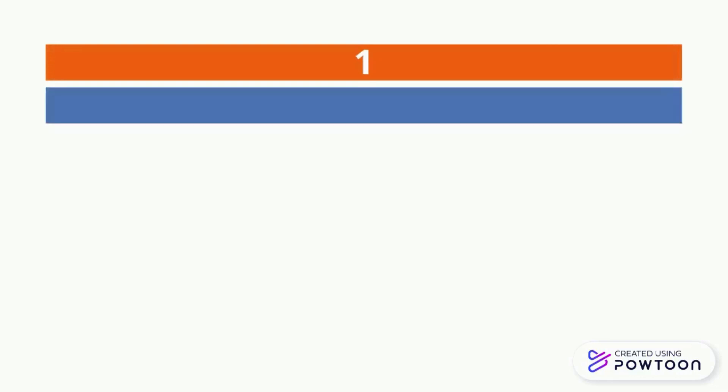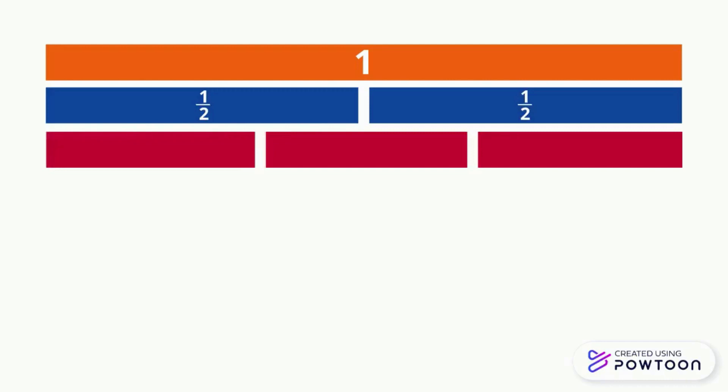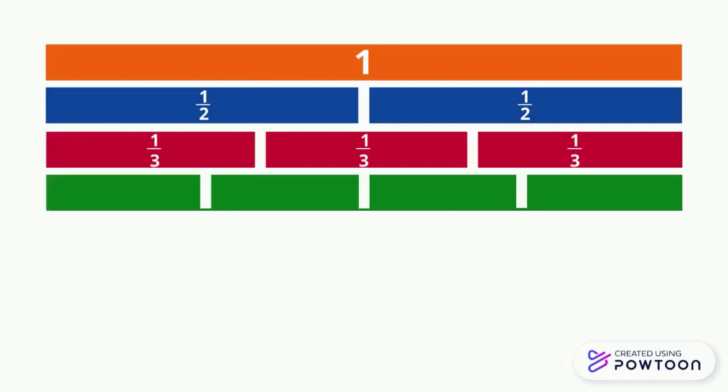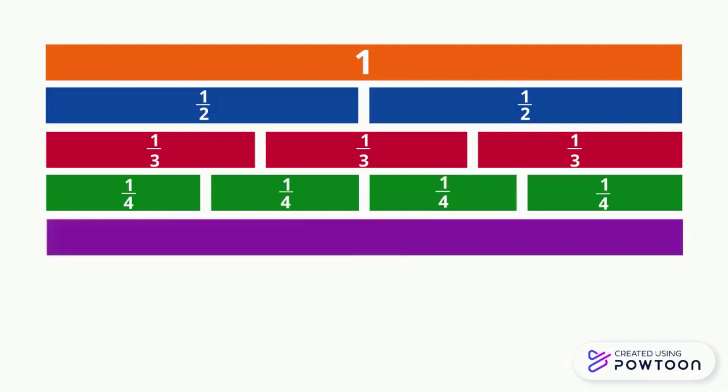So, if we have a rectangle, and we divide it into two equal parts, then the fraction of each part is 1 over 2, which is 1 half. If we divide it into three, then the fraction of each part is 1 over 3. If we divide it into four, the fraction of each part is 1 over 4. If we divide it into five, the fraction of each part is 1 over 5, and so on.